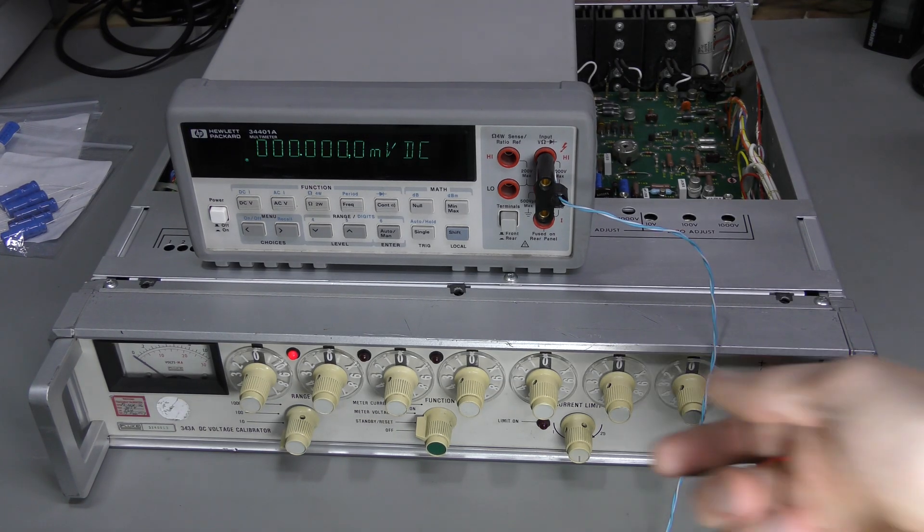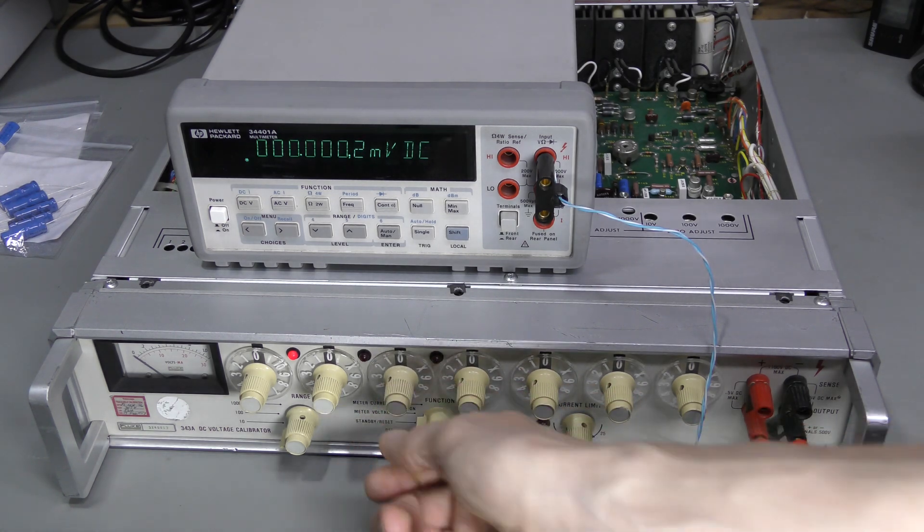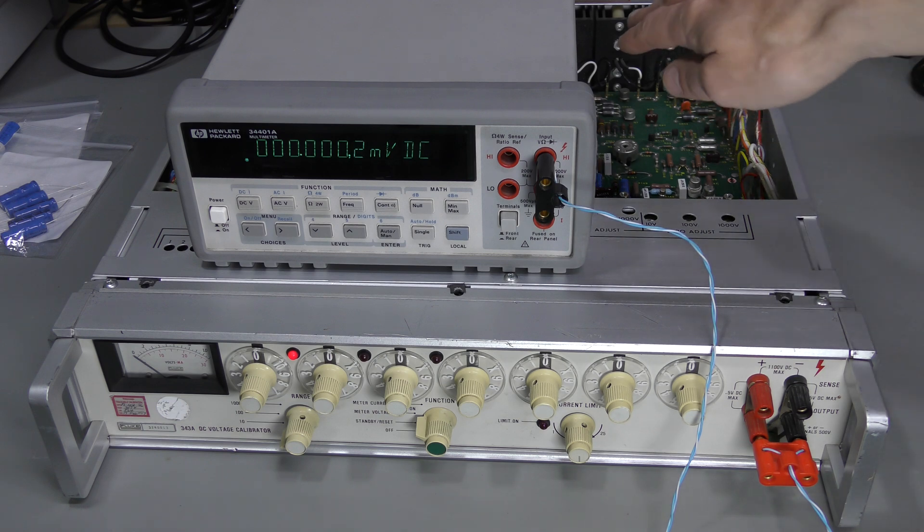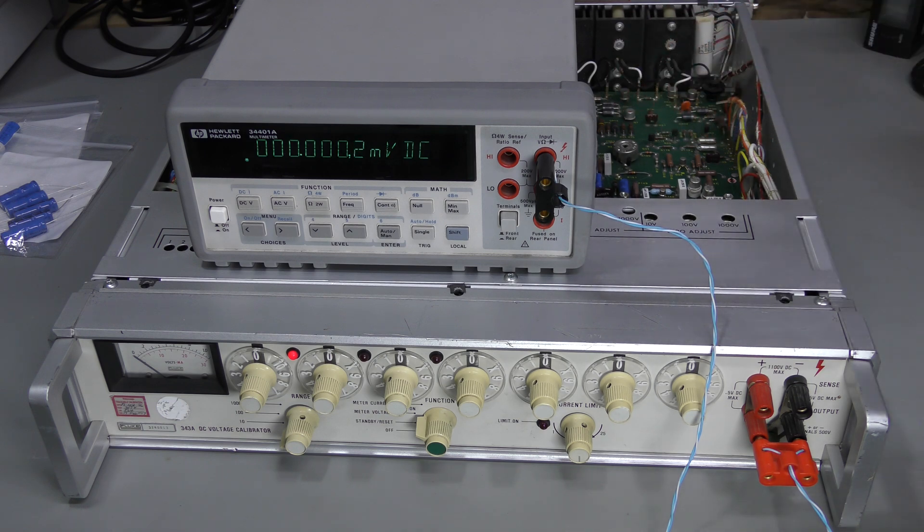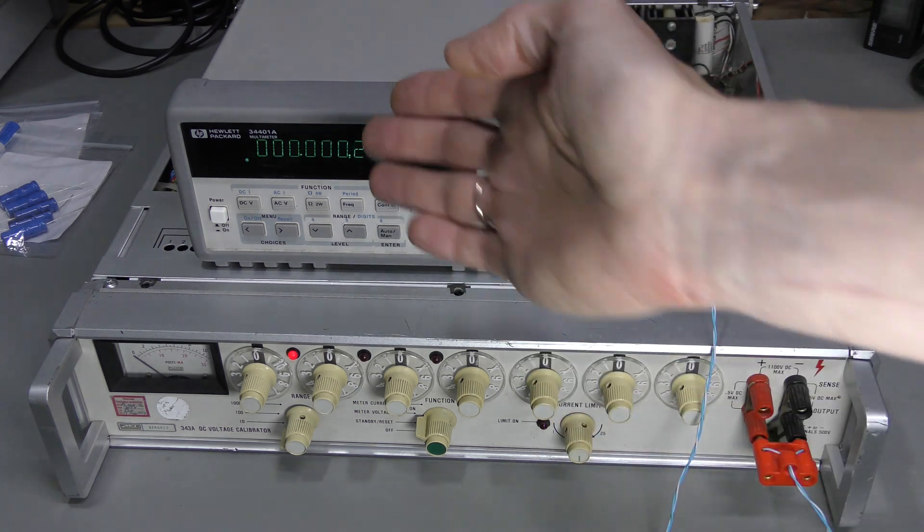I also found that wiggling some switches could change that offset quite a bit. So I cleaned the switches and now I cannot reproduce this anymore. And also the service manual says that adjusting the chopper amplifier is supposed to shift zero point. So I adjusted zero points for all three ranges and now we are good.